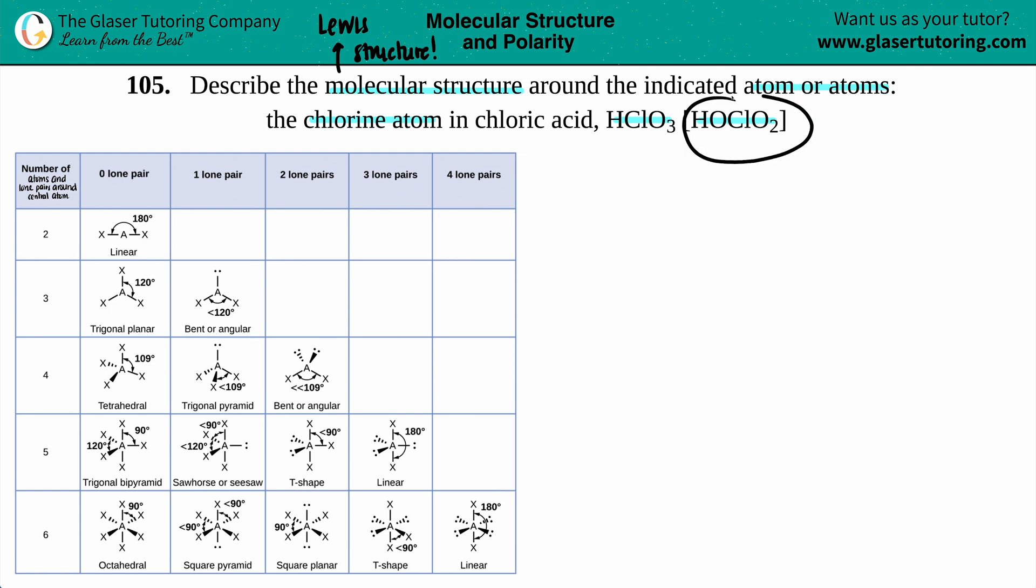You could pause the video and see if your Lewis structure matches mine. I'm going to follow this idea here. We have a hydrogen bound to an oxygen, which is bound to a chlorine. So I have hydrogen all the way out, which is bound to an oxygen, which is bound to a chlorine. And then that chlorine, if I look over, it says O2, so that chlorine has to have two oxygens.